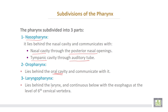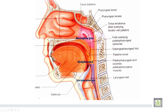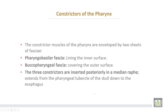Laryngopharynx lies behind the larynx and is continuous with the esophagus at the level of the sixth cervical vertebra. The nasopharynx communicates with the nasal cavity and through the Eustachian tube with the tympanic cavity. Oropharynx communicates with the oral cavity, and laryngopharynx communicates with the larynx and continues downward as the esophagus.